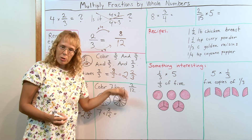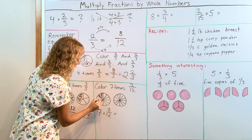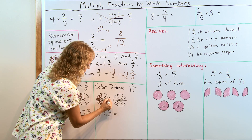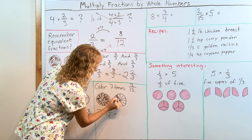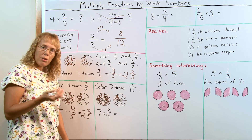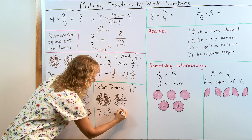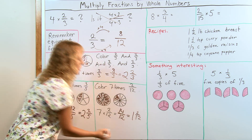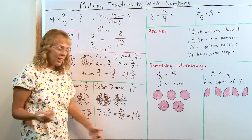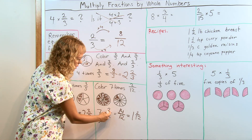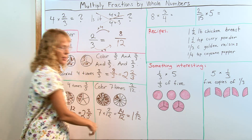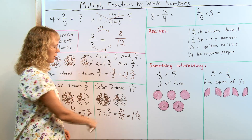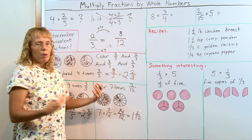Or color 7 times 2 twelfths: 2 twelfths, another, 3rd time, 4th time, 5th time, 6th time, and 7th time. You can count how many twelfths you have — you have 12 here and 2 more, so it is 14 twelfths, or 1 whole pie and 2 twelfths. It is very easy to see that what you actually do as a shortcut is multiply the whole number times the numerator, and the denominator stays the same. Because they are twelfths parts — it is kind of like 7 times 2 parts, so you get 14 parts, and the parts happen to be twelfths.